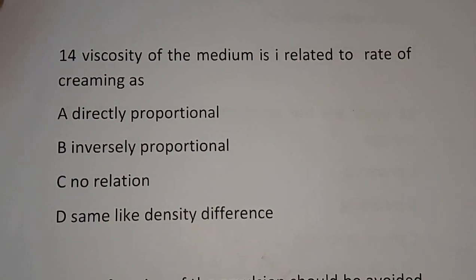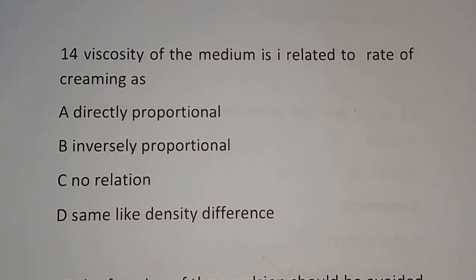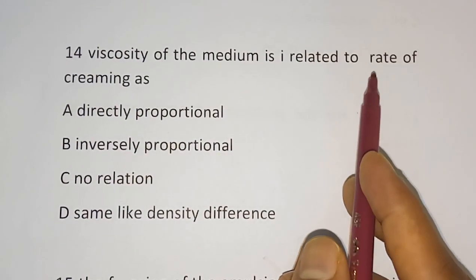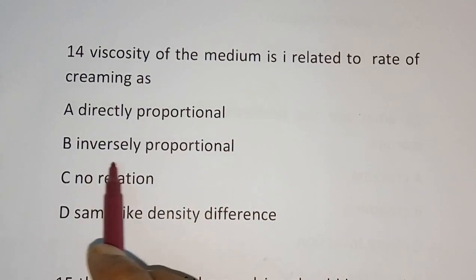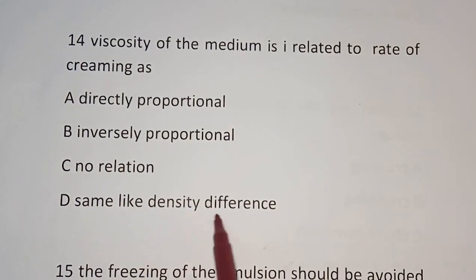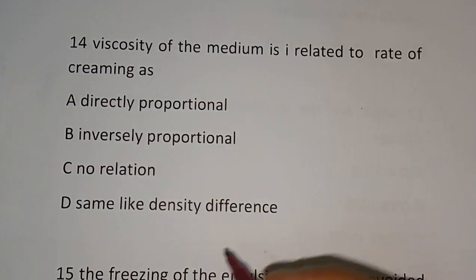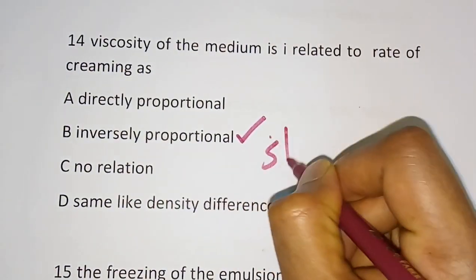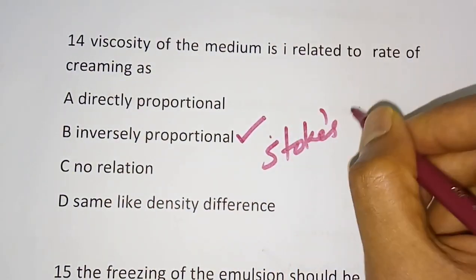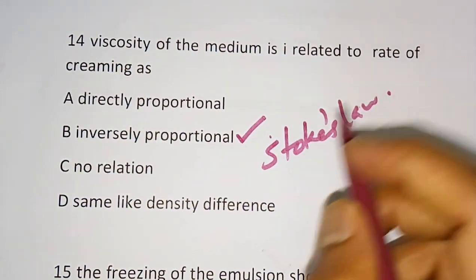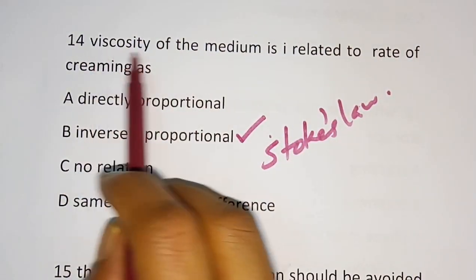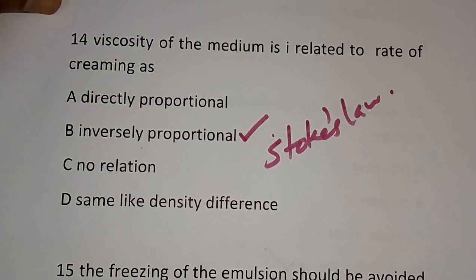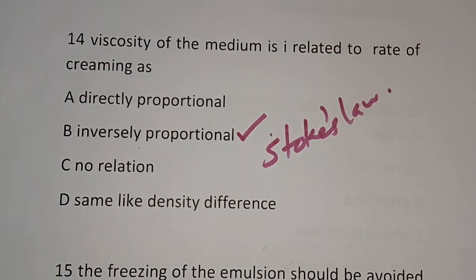Question number 14: Viscosity of the medium is related to the rate of creaming. Options are directly proportional, inversely proportional, no relation, or same as density reference. The correct answer is inversely proportional. According to Stokes' law, viscosity is inversely proportional to the rate of creaming.